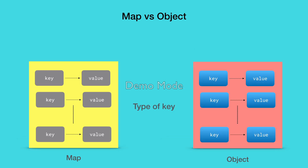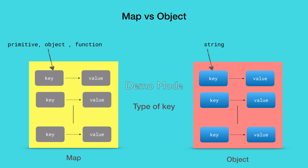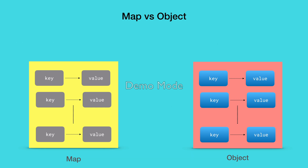The first difference is based on the type of key. JavaScript map allows you to have a key-value pair where the key could be a primitive type, an object, or even a function. But with objects, where every property consists of a key-value pair, you could only have the key of type string. So even if you assign a key of type number, it will be converted to string.